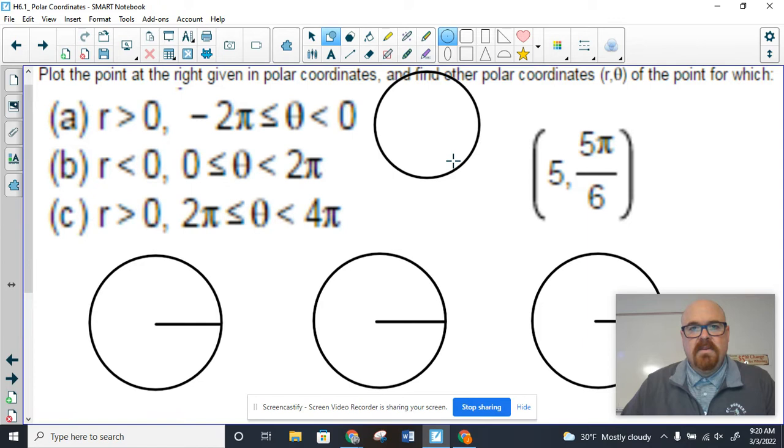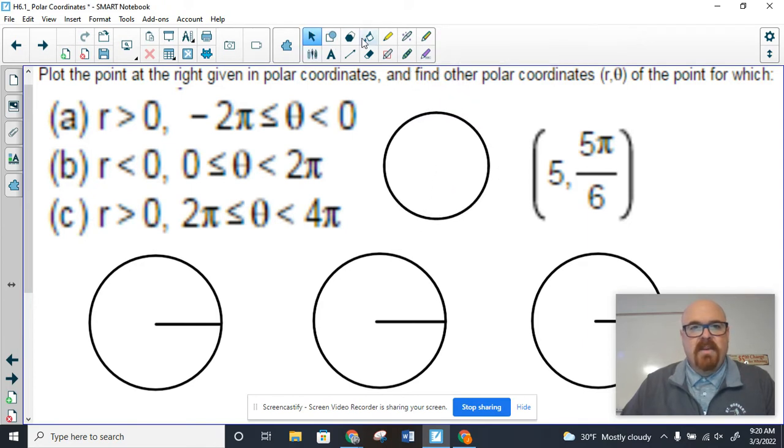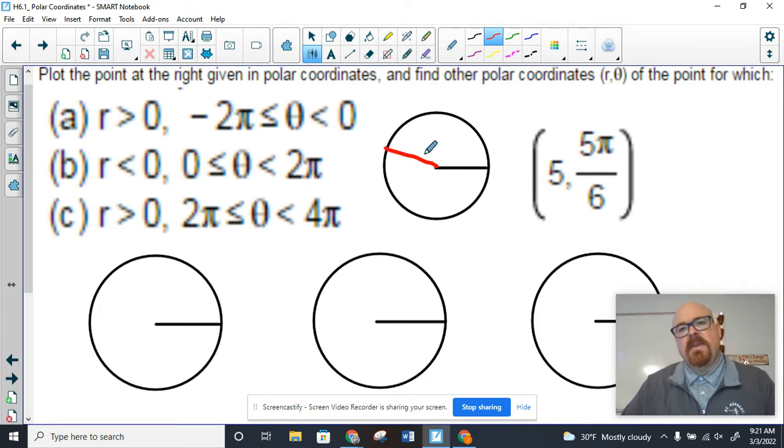So first, I forgot to add a circle here where we could actually plot (5, 5π/6). Remember that when we're plotting a point in polar coordinates, we want to start with the angle. So 5π/6 is the rotation of this line over to where 5π/6 is, which is about right here. That's maybe a little off, but you get the idea.